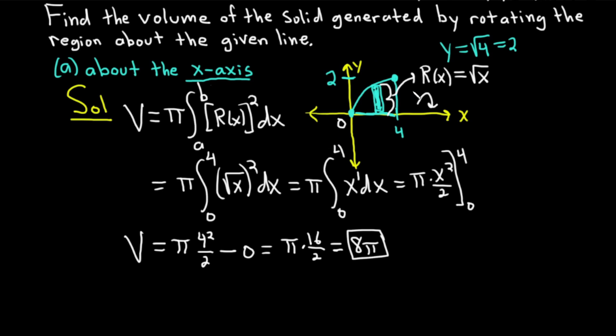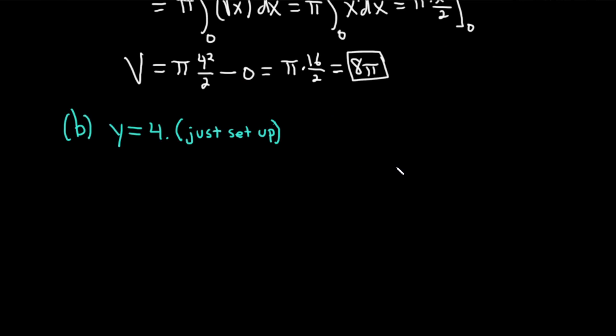I want to emphasize that big R is the distance from the top of the rectangle — the far end — all the way to the axis of revolution, and it's always perpendicular to your axis of revolution. Let's do a much harder example. Part B: this time the line is y equals 4.